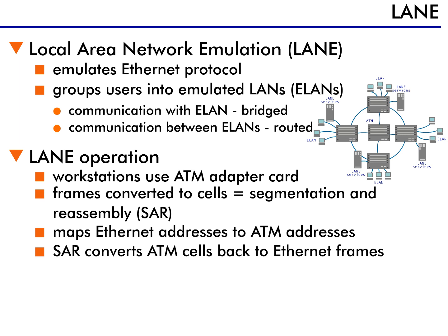LANE operates this way. A workstation has an ATM adapter card installed instead of an Ethernet adapter card. When the workstation sends data, the data is first converted into an Ethernet frame, and then broken up and converted again into ATM cells. One Ethernet frame becomes many cells because ATM cells are much smaller than Ethernet frames — 53 bytes versus over 1,000 bytes.